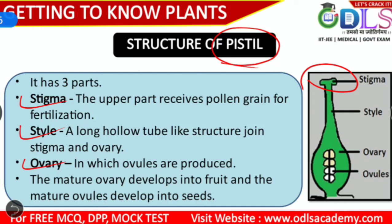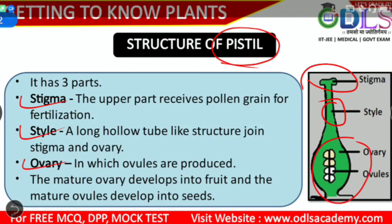The other part is the tube-like structure — this is the style. The tube-like structure connects the stigma and the ovary; the style joins the stigma and ovary together. The bottom part is what we call the ovary. Inside the ovary, ovules are produced. The ovules later become the seeds.